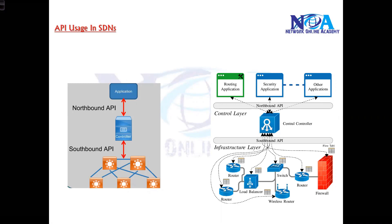In this section we will try to understand the role of an API in the SDN world of networking. Like in the previous sections, we have already discussed about APIs, the types of APIs, and how they are going to allow communication between different applications with some examples.